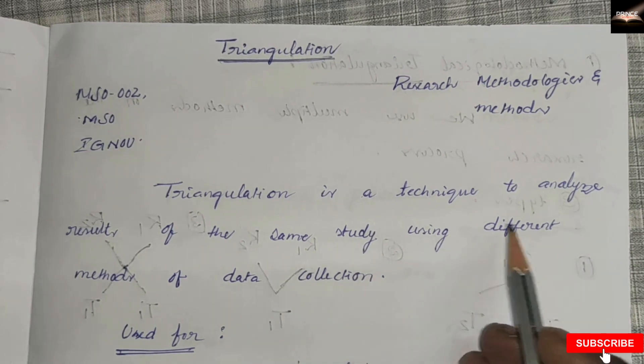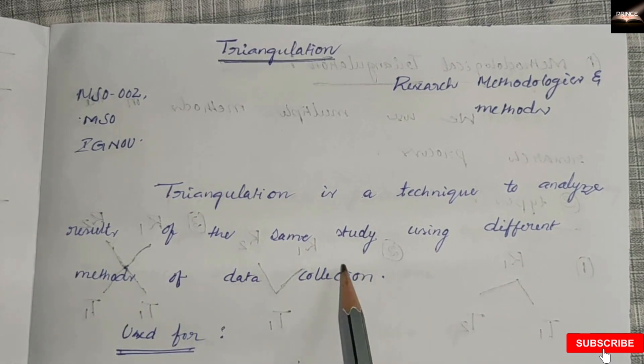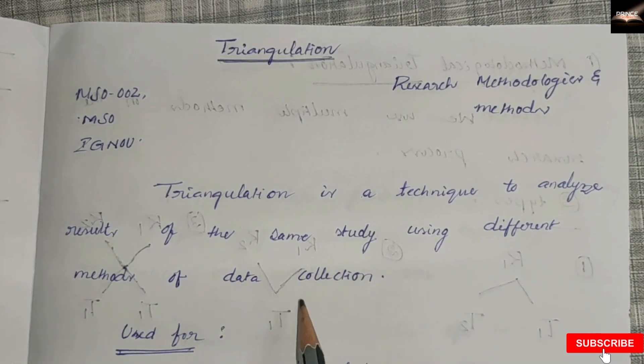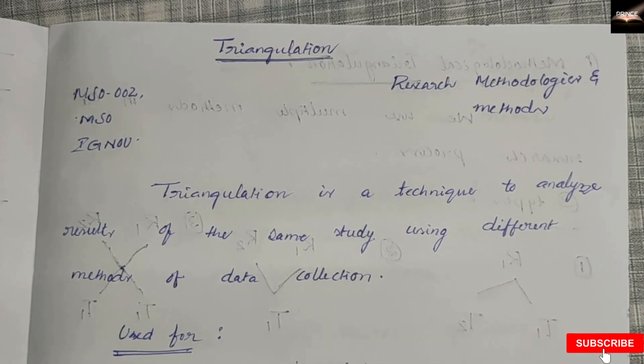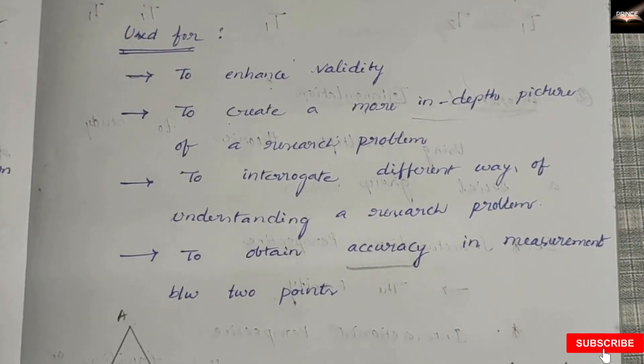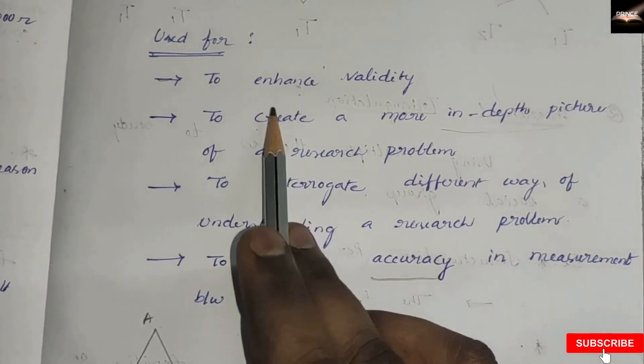Triangulation is a technique to analyze results of the same study using different methods of data collection. This is also used to enhance validity.